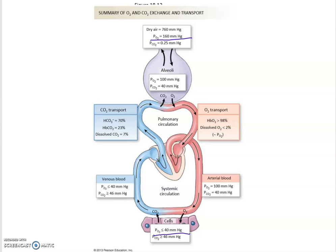When it comes to the transport of CO2, we are going to switch back and forth between 40 and 46 millimeters of mercury. At the level of the alveoli we have a partial pressure of CO2 of 40 millimeters of mercury, and in the tissues we have 46 millimeters of mercury.